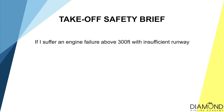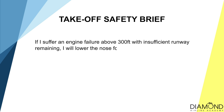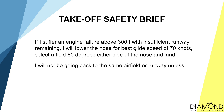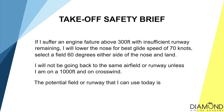If I suffer an engine failure after rotation with insufficient runway remaining, I will lower the nose for best glide attitude and best glide speed of 70 knots, pick a field 30 degrees either side of the nose, apply flaps as required and land. If I suffer an engine failure above 300 feet with insufficient runway remaining, I will lower the nose for best glide speed of 70 knots, select a field 60 degrees either side of the nose and land. I will not be going back to the same airfield or runway unless I'm at 1000 feet and on crosswind. The potential fields or runways I can use today are runway 17L or 35L.